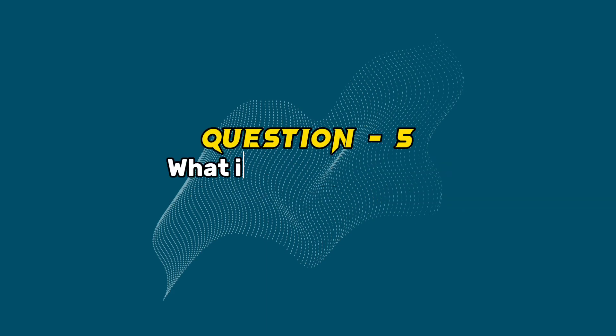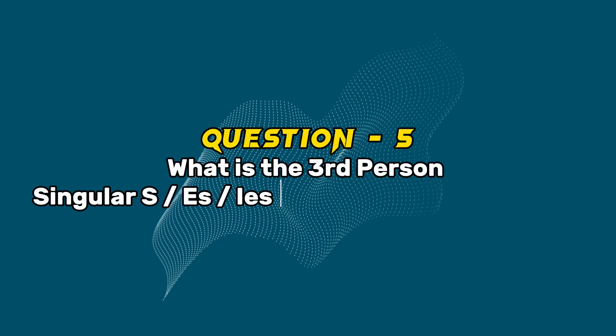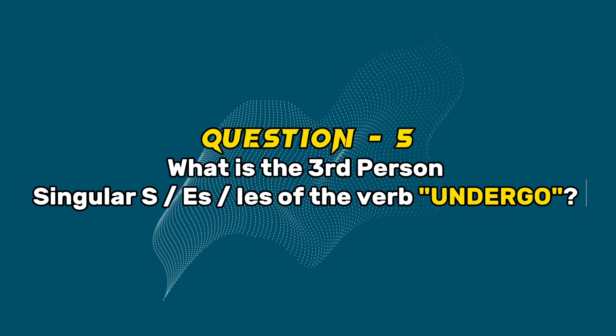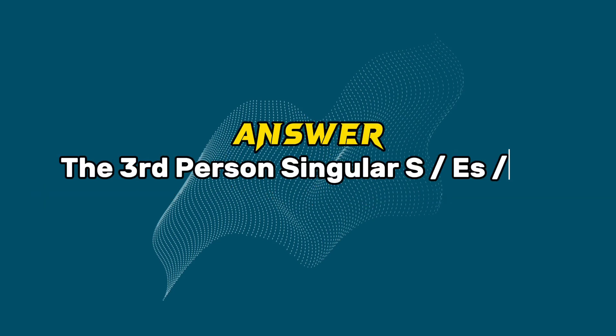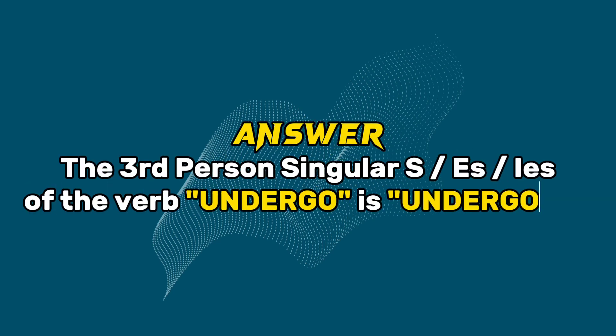Question 5: What is the third person singular form of the verb undergo? Answer: The third person singular form of the verb undergo is undergoes.